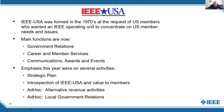IEEE USA — my last slide. IEEE USA was formed in the 1970s at the request of U.S. members to concentrate on U.S. member needs and issues. The main functions now are government relations, career and member services, and communications, awards, and events. The continued emphasis this year is revamping the strategic plan, which was just completed this week during our IEEE USA board meeting, along with introspection of IEEE USA and its value to members. We've created two ad hoc committees: one on alternative revenue activities focused on events and conferences, and one on local government relations.